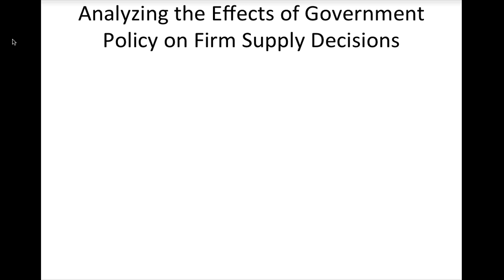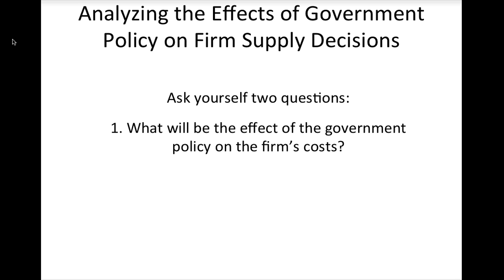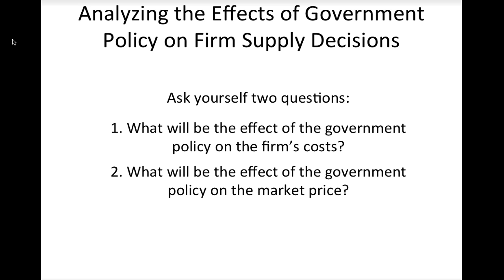To analyze the effects of government policies on a firm's supply decisions, ask yourself two questions. First, what will be the effect of the policy on the firm's costs? Note that if the policy affects the market for one or more inputs the firm uses, it will likely affect the firm's cost. Second, what is the effect of the policy on the market price of the firm's product? Once you have answered these questions, you will be able to analyze whether the firm will increase its supply, decrease its supply, or leave its supply unchanged. This concludes this lesson on firm supply. In class, you will have the chance to derive and analyze a firm's supply decisions under different cost scenarios.